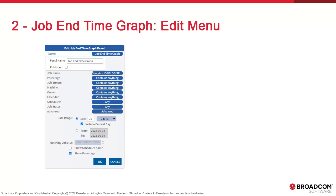The edit menu consists of a filter on the job name, and you have the option of selecting multiple jobs, which will produce a much longer report. You can cross-reference with AI job streams, machines, status, and so forth. You should also enter a time period, which should be at least 30 days.